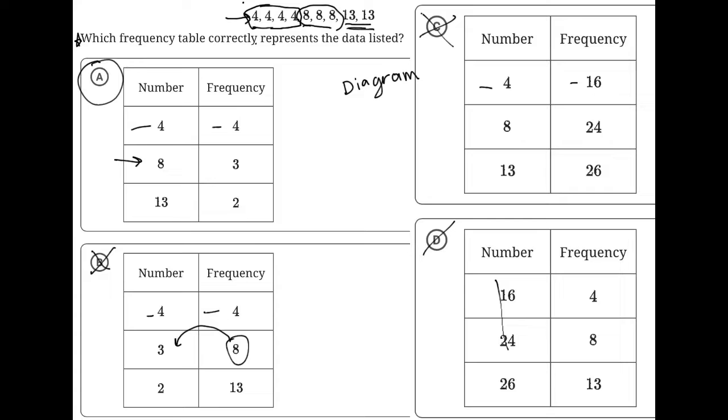And just to verify the last step, there should be two thirteens. So our data point is 13 with a frequency of two, meaning there are two thirteens. So yes, choice A is in fact the correct answer.